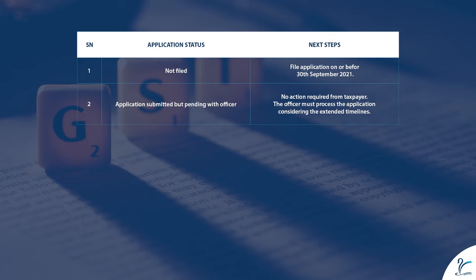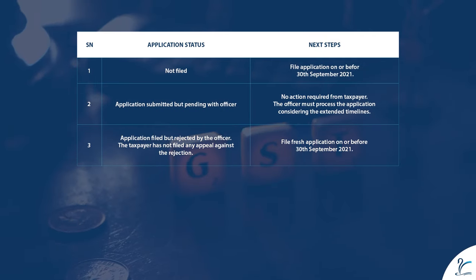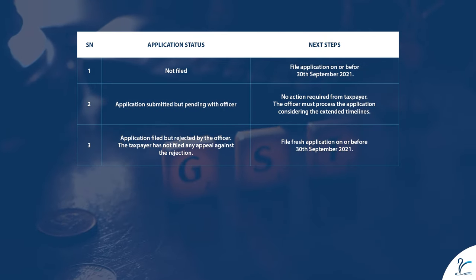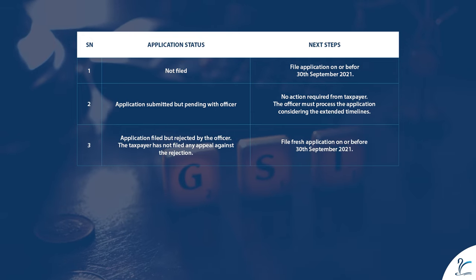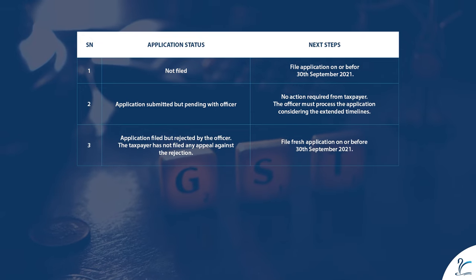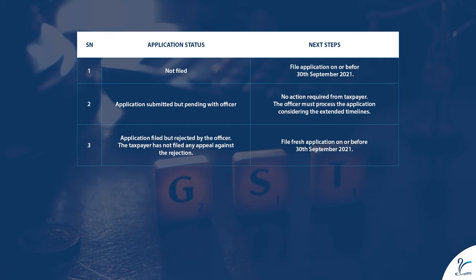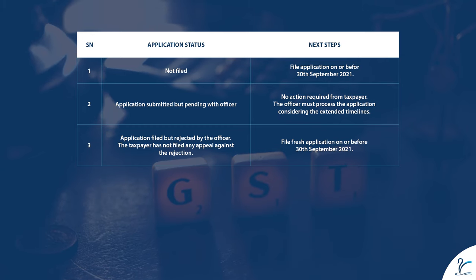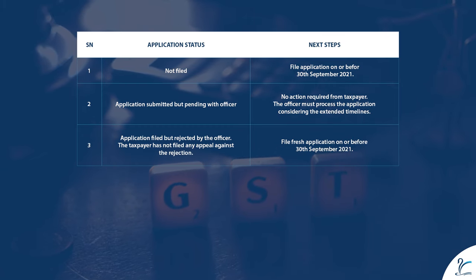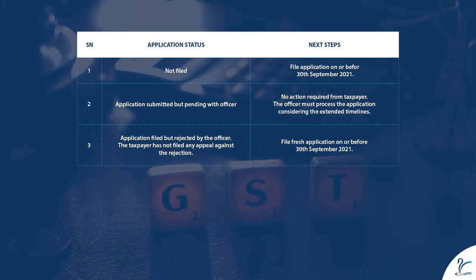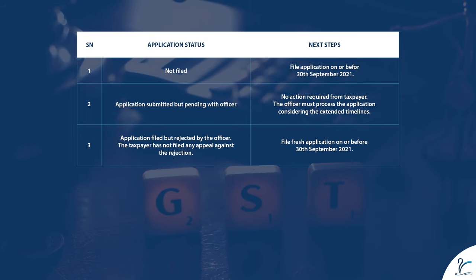Status three — application filed but rejected by the officer, and the taxpayer has not filed any appeal against the rejection: next steps — file a fresh application on or before 30th September 2021.